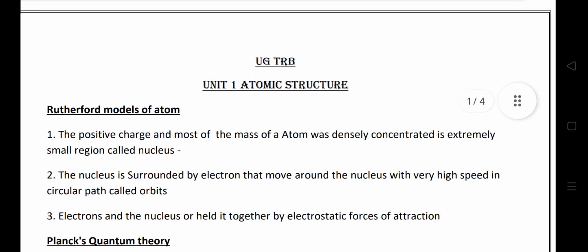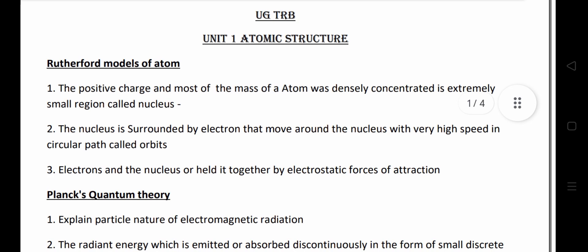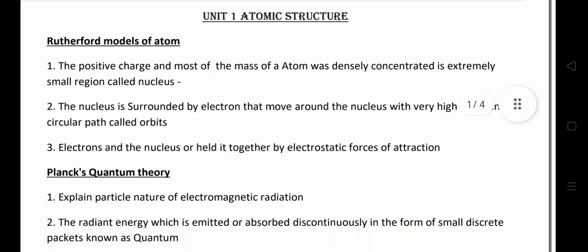Rutherford model of atom: The positive charge and most of the mass of the atom is densely concentrated in an extremely small region — that is the nucleus. The nucleus is surrounded by electrons that move around it in a circular path called an orbit, at high speed. Electrons and the nucleus are held together by electrostatic force of attraction.